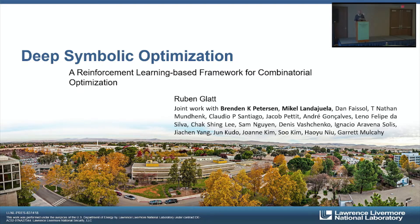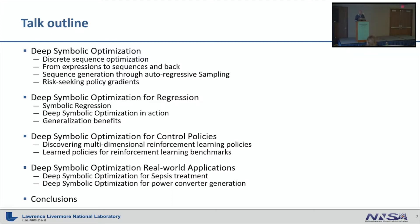My name is Ruben and I'm a machine learning researcher at the Lawrence Livermore National Laboratory. I'm going to talk about deep symbolic optimization, which is a framework based on reinforcement learning for combinatorial optimization that we developed at the lab. This is based on work from a whole team, from which I want to highlight the PI Brennan Peterson and Mikael Landahuela, who have spent the most time on this project. The talk will cover what our problem is, how we approach it, some underlying technologies with simple examples, and application examples for regression, classic reinforcement learning control policies, and some real-world examples.